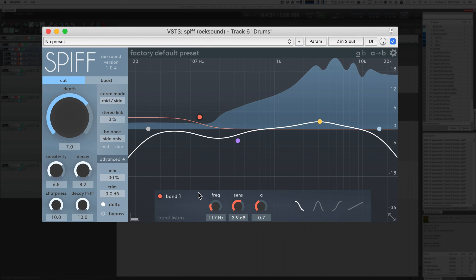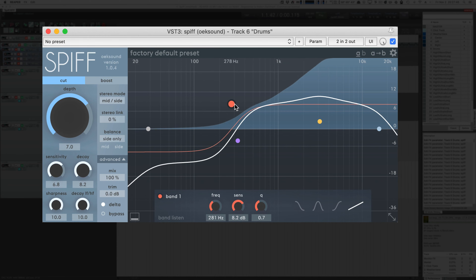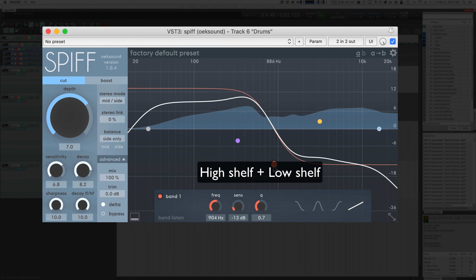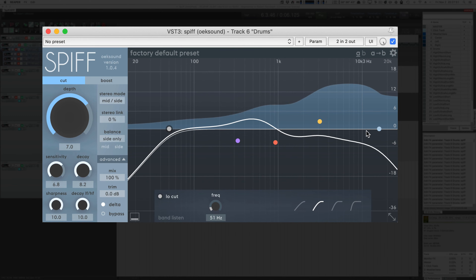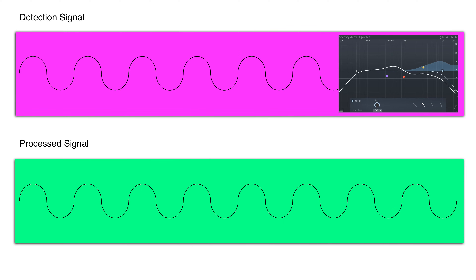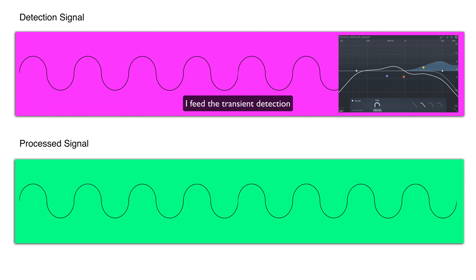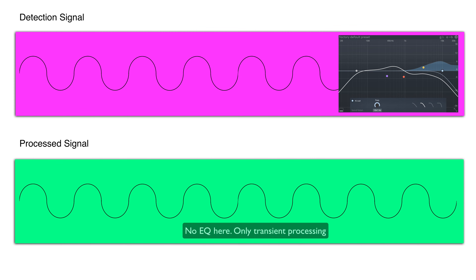On the right side, we have what looks like an equalizer — and it is an equalizer. You have three bands that you can freely set to bell, high shelf, low shelf, or a tilt filter, which is both combined. You also have high and low pass filters. Spiff has at least two signal paths: the detection signal path and the processing signal path. The equalizer works on the detection signal — it influences the transient detection process — but it does not apply the equalization to the processing. Only the transient process is applied to the processing signal.